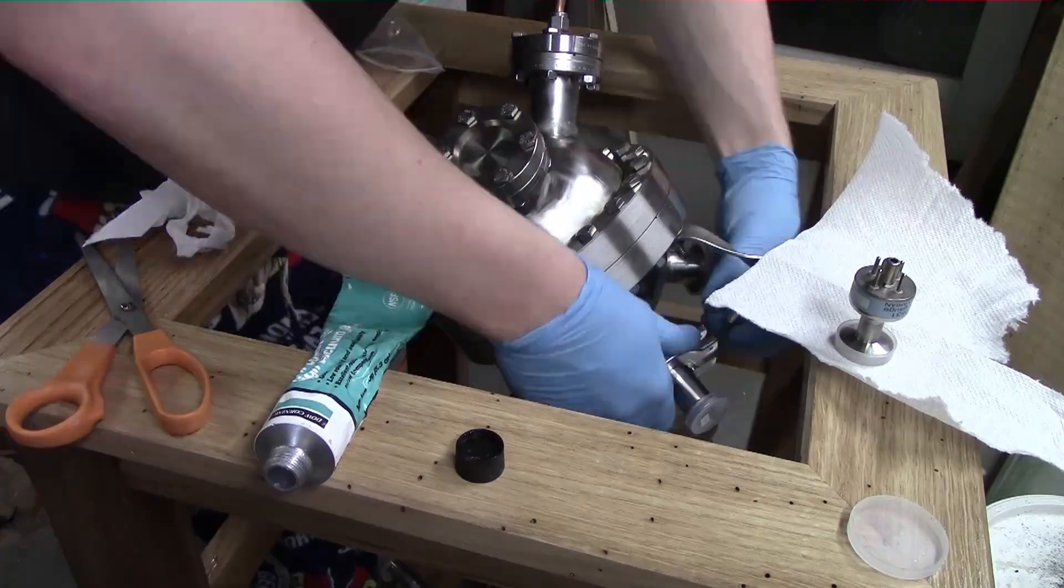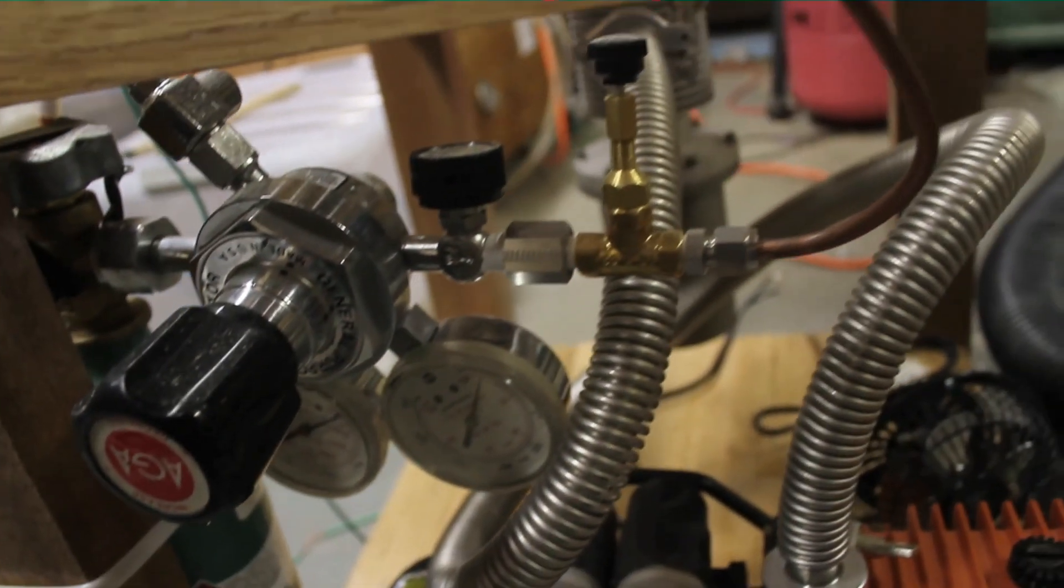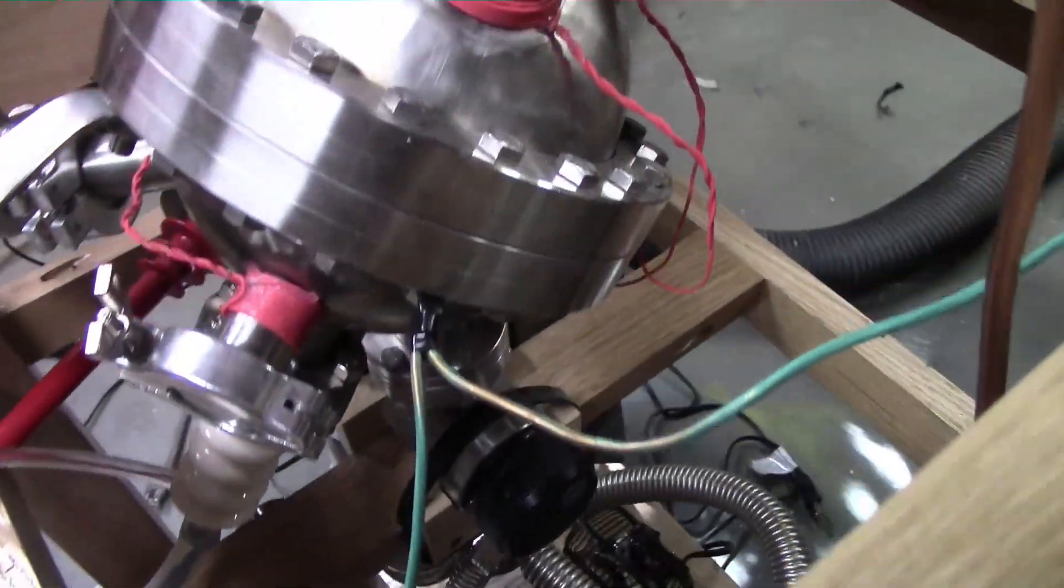I just hooked up a thermocouple gauge and end cap. I didn't bother to use a better gauge. Then added the deuterium tank and regulator with some zip ties. Then put in the high voltage system and made sure I had a really good ground.